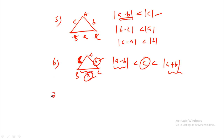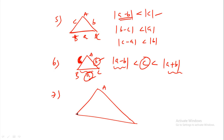In triangle ABC with angles A and B and opposite sides small a, small b, small c — the greatest angle has the greatest opposite side, and the smallest angle has the smallest opposite side.